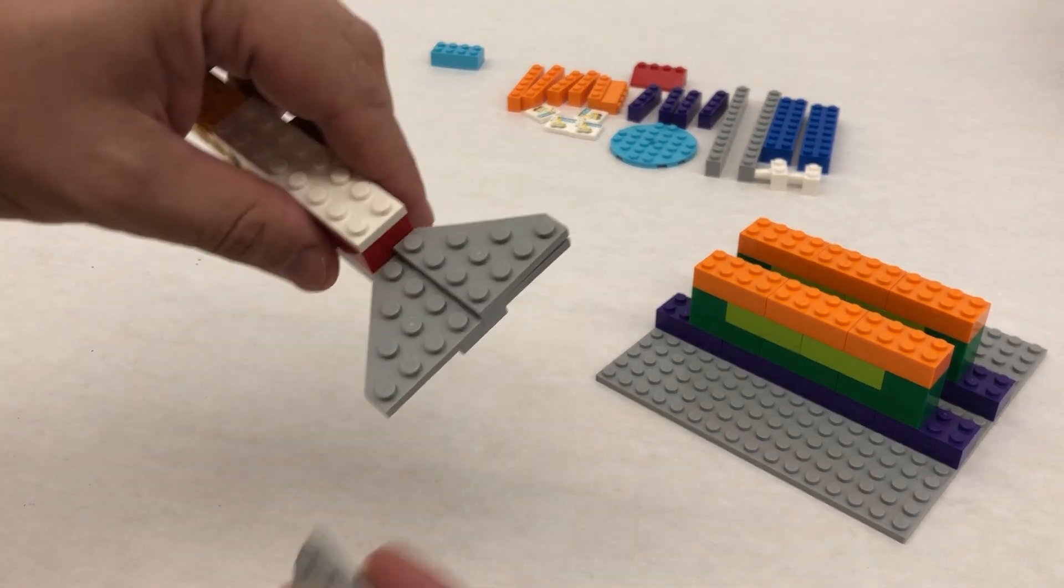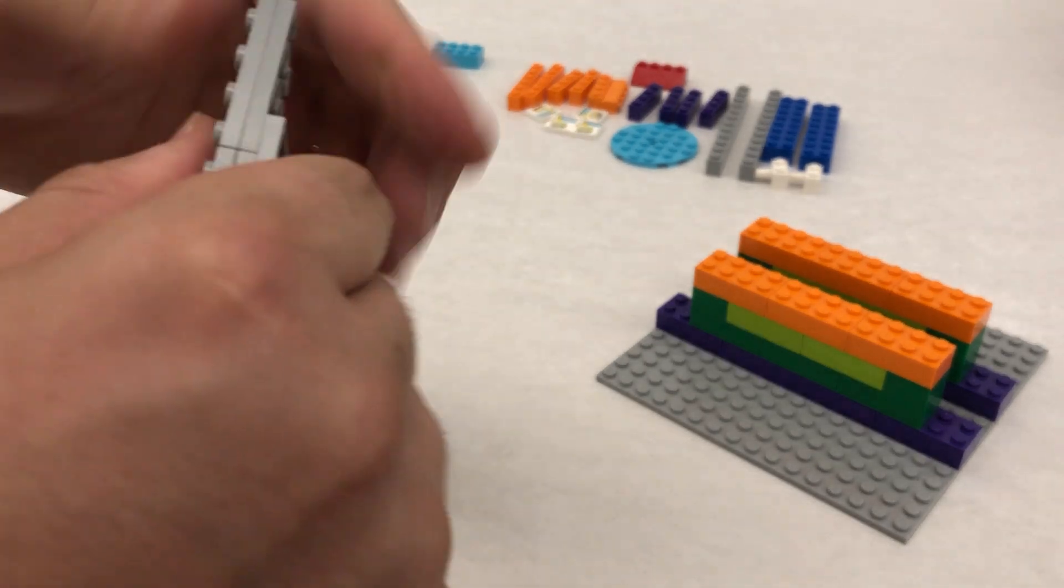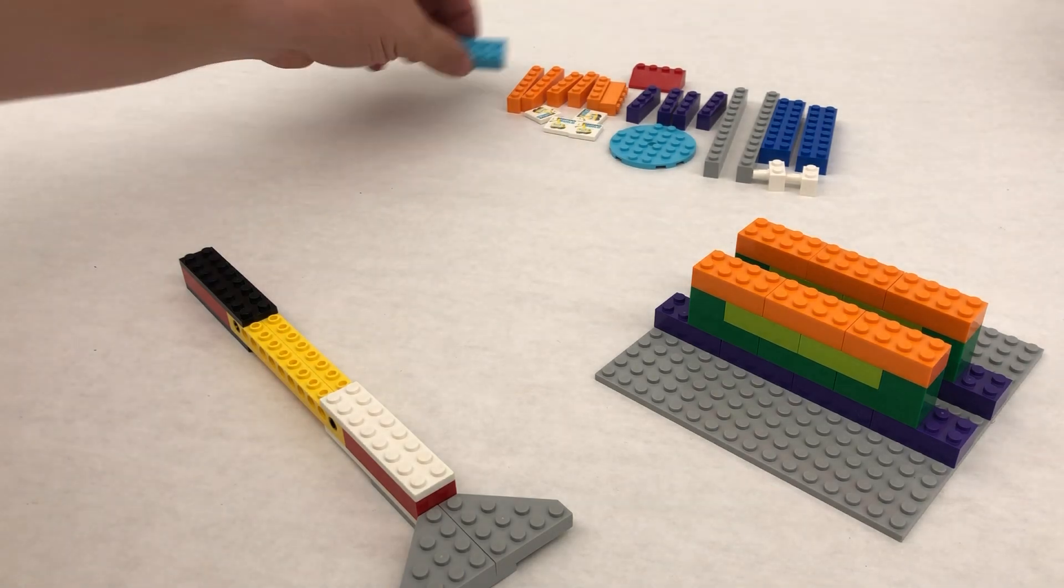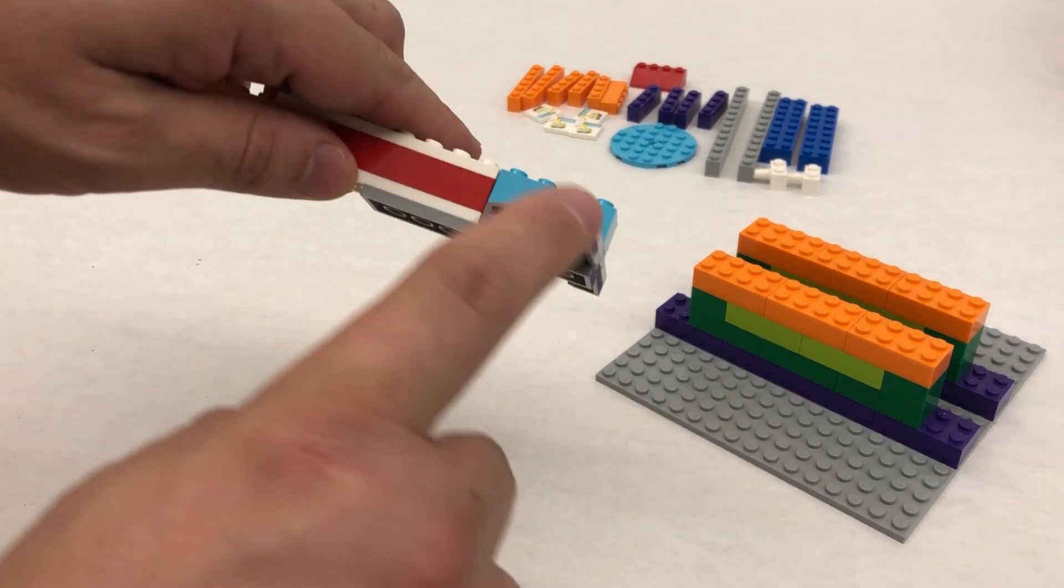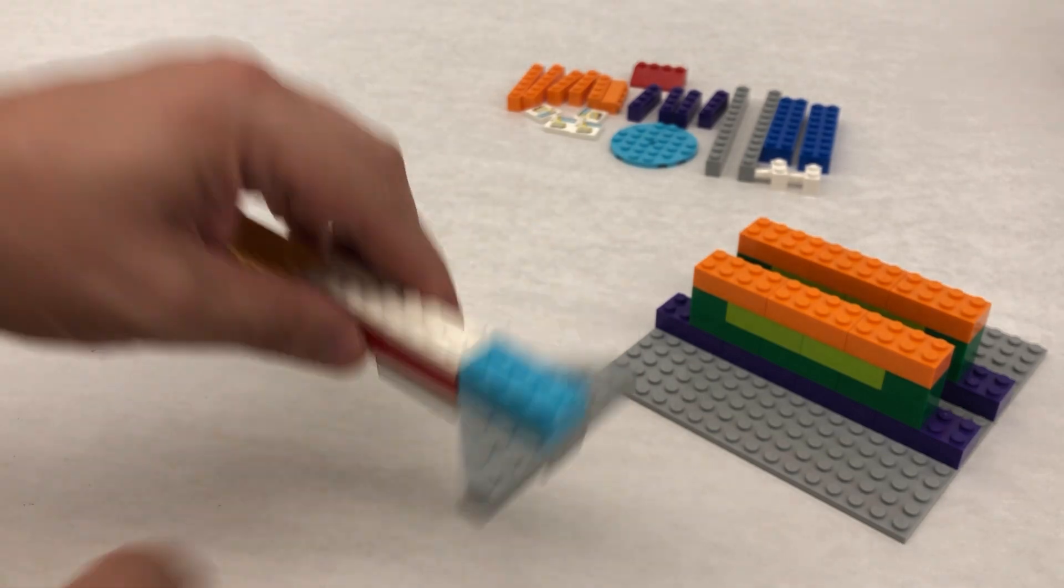So these are just kind of acting as spacers that are gonna space out correctly. We're just stacking them on top of each other. If you want you can press them all down, and then on top of those we're gonna put a brick. You see we use these spacers to get this brick in line with the rest of our plates.